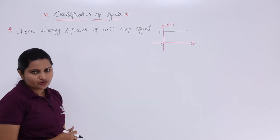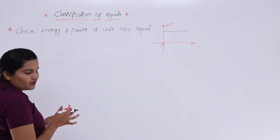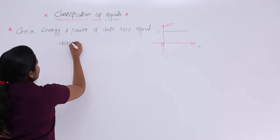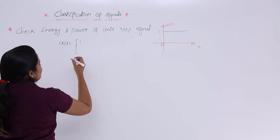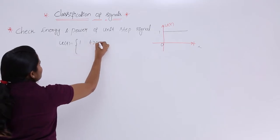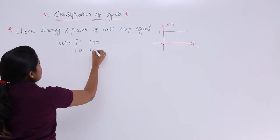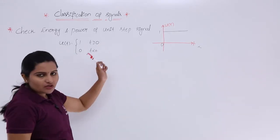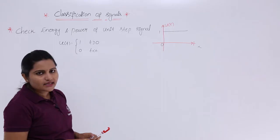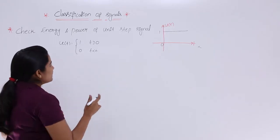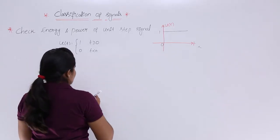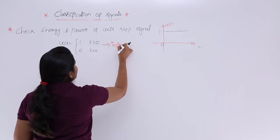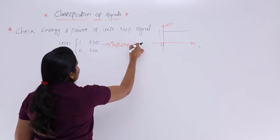We can say this is an infinite duration signal. The definition of the unit step signal is: u(t) = 1 when t ≥ 0, and 0 when t < 0. That means t ≥ 0, up to infinity, is equivalent to 1. Based on this, you can confirm this is an infinite duration signal.